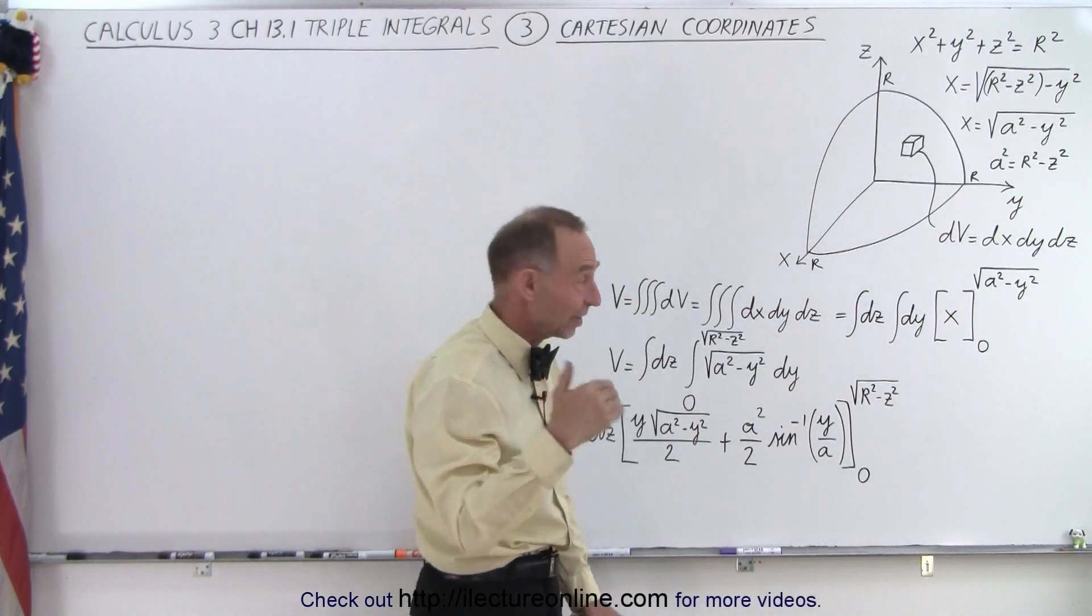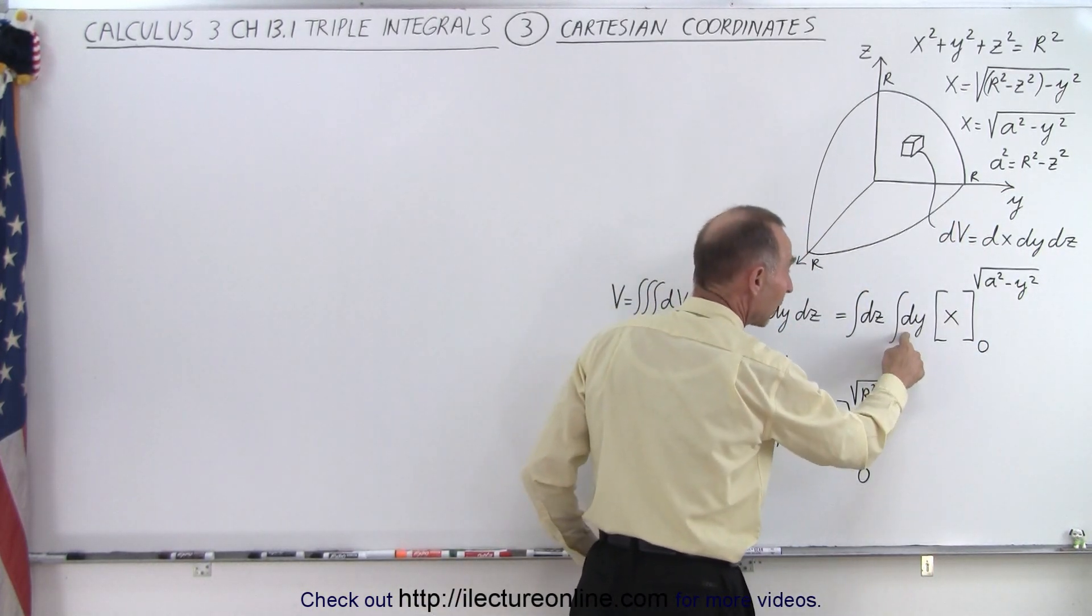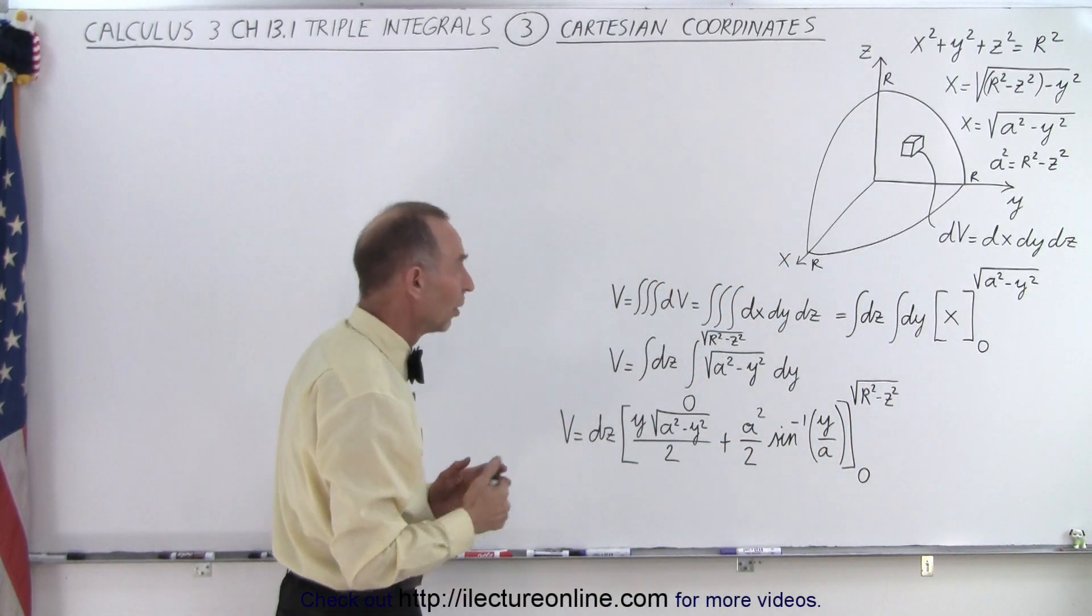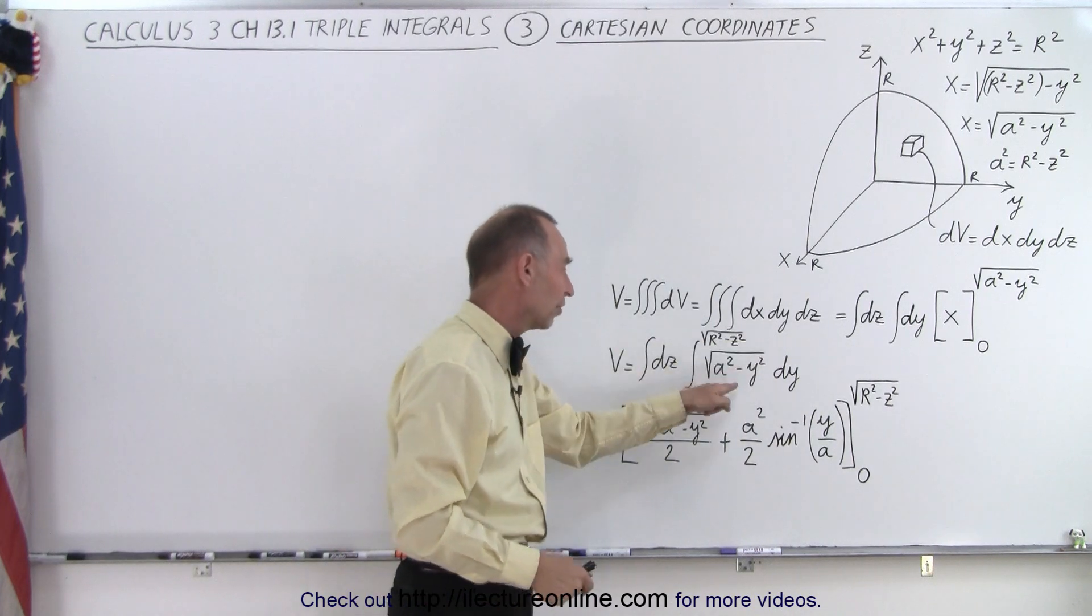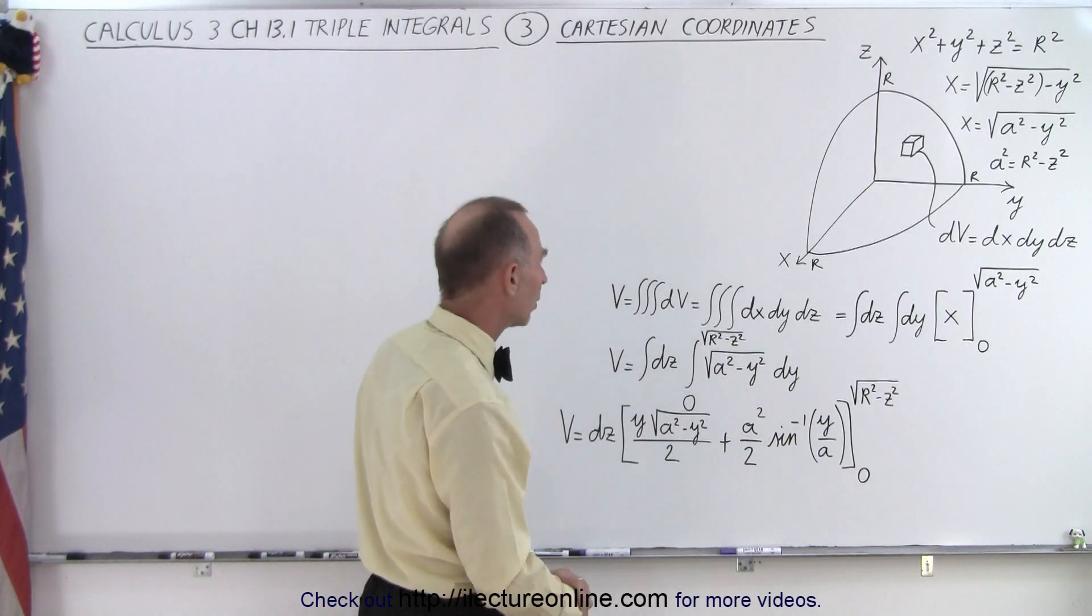We can do that because in the next integral when we integrate over dy, z will remain a constant. So when we plug in the upper limit, we get that. We plug in the lower limit, we get 0. So there's our next integral.